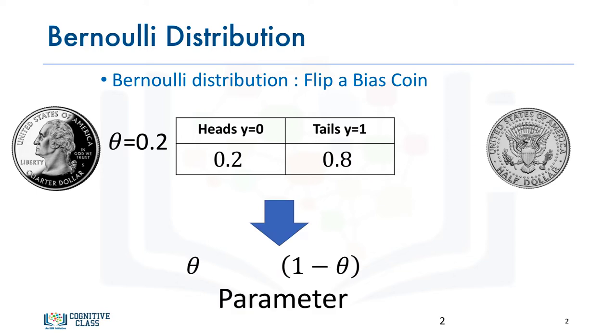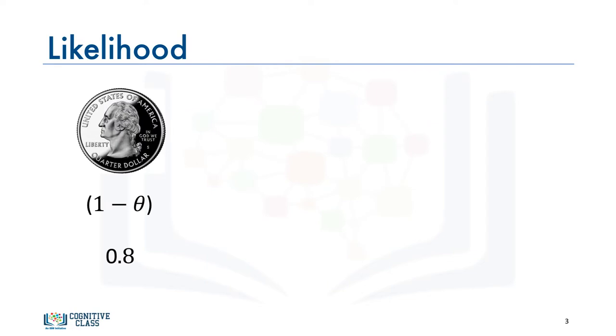The probability of heads is simply given by theta, and the probability of tails is 1 minus theta. We can observe the likelihood of a sequence of events by multiplying the probability of each event together to obtain the likelihood. For example, we have heads — the probability of observing one head is 0.8.